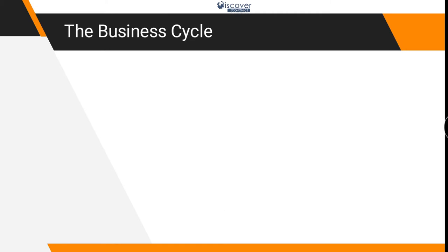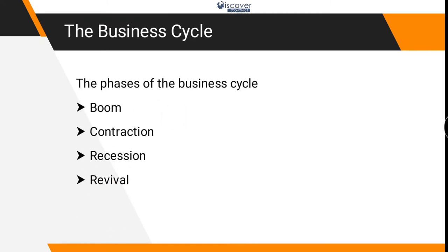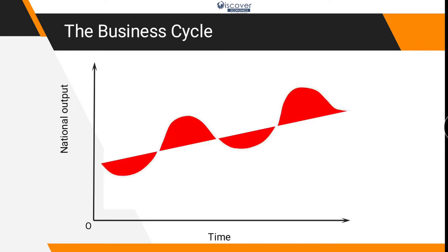So let's start with the business cycle. We have four phases: boom, contraction, recession, and revival. The economy is actually moving in ups and downs — we were expecting a straight line, but actually somewhere we are performing below expectations and somewhere above expectations.